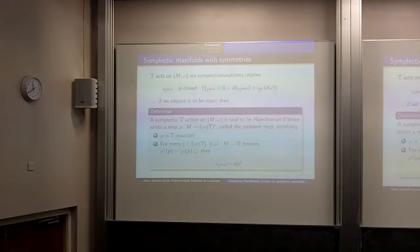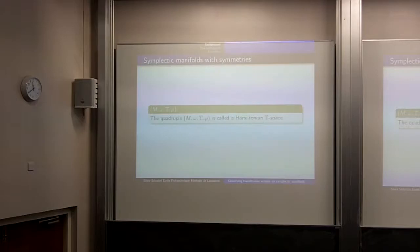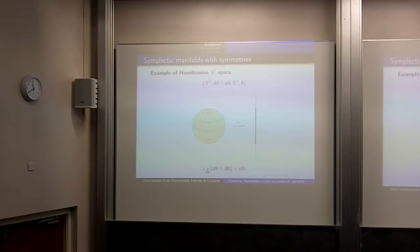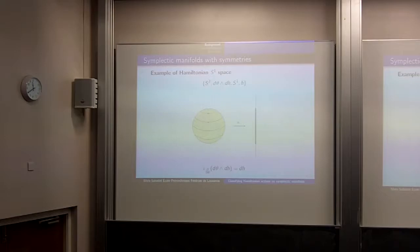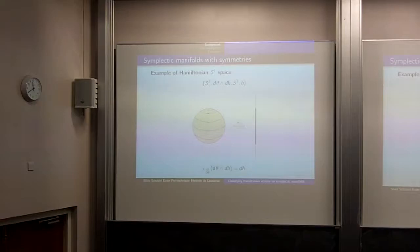The first example is S² with symplectic form dθ ∧ dh, with an S¹ action. The Hamiltonian is precisely the height function h. The vector ξ# is just ∂/∂θ — tangent to the parallels — and contracting ∂/∂θ with dθ ∧ dh gives dh. So h is the moment map, and it is S¹-invariant: all points on the same parallel have the same height.